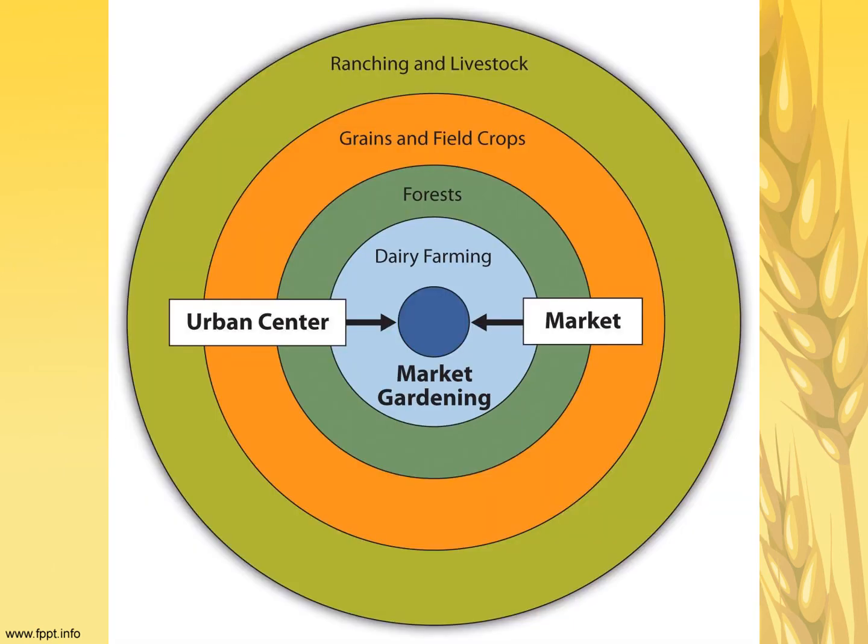Here is the Von Thünen model as displayed. The center is the market — the urban center and suburbs. The first ring shows the milk shed and market gardening. The second ring shows forest. The third ring shows grains. The fourth ring shows ranching.